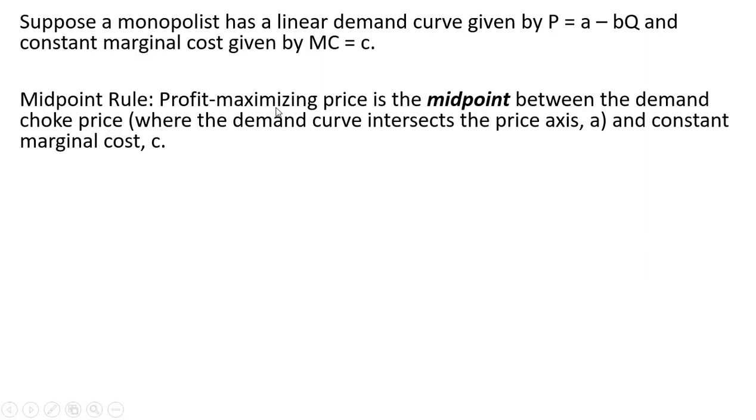The midpoint rule states that the profit maximizing price is the midpoint between the demand choke price and constant marginal cost. The demand choke price is the vertical intercept, or a, just where the demand curve touches the vertical axis. So it's just the midpoint between those two values.